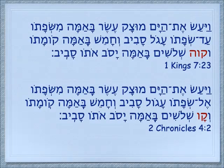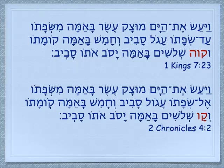Now we're going to find something interesting when we go back to 1st Kings 7:23. The exact parallel verse for the description of Solomon building the laver is in 2nd Chronicles 4:2. Even if you don't read Hebrew, you can see these two verses are exactly the same, except for the words that are highlighted — that word for 'line.' In 1st Kings it's spelled with a hey, which is an incorrect spelling, and in Chronicles it's just spelled kuf-vav, which is the correct spelling.